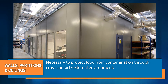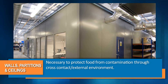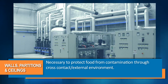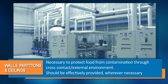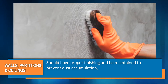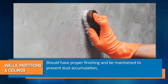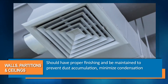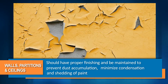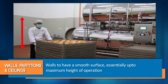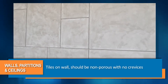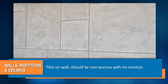Walls, partitions and ceilings are necessary to protect food from contamination through cross-contact or external environment. They should be effectively provided wherever necessary, have proper finishing, and be maintained to prevent the accumulation of dust, minimize condensation and shedding of paint. Walls shall have a smooth surface essentially up to the maximum height of operation.